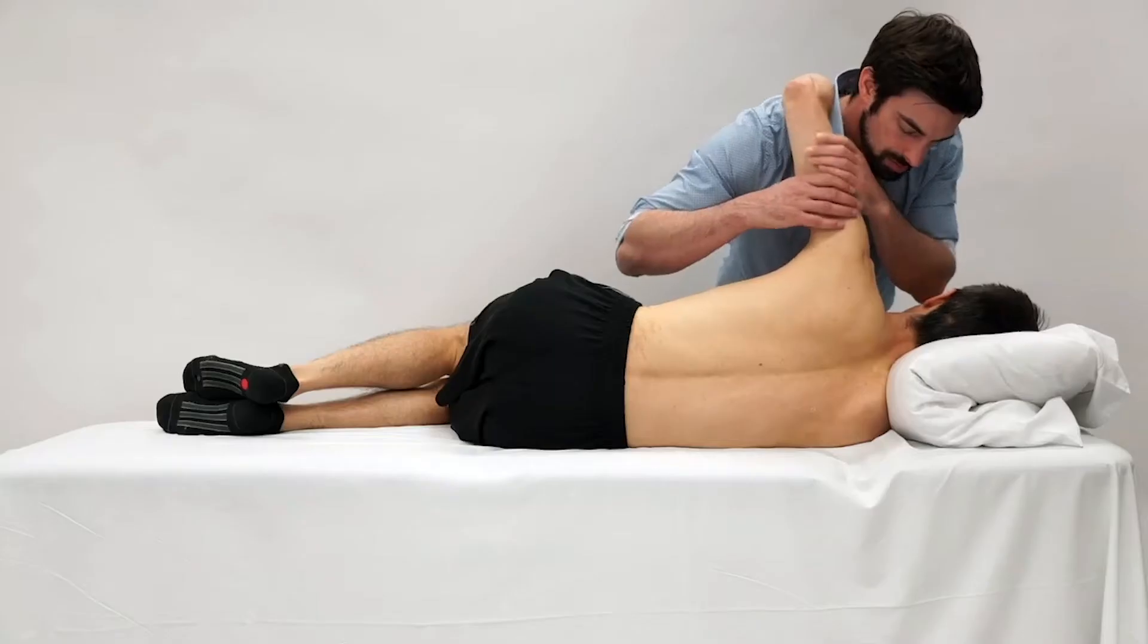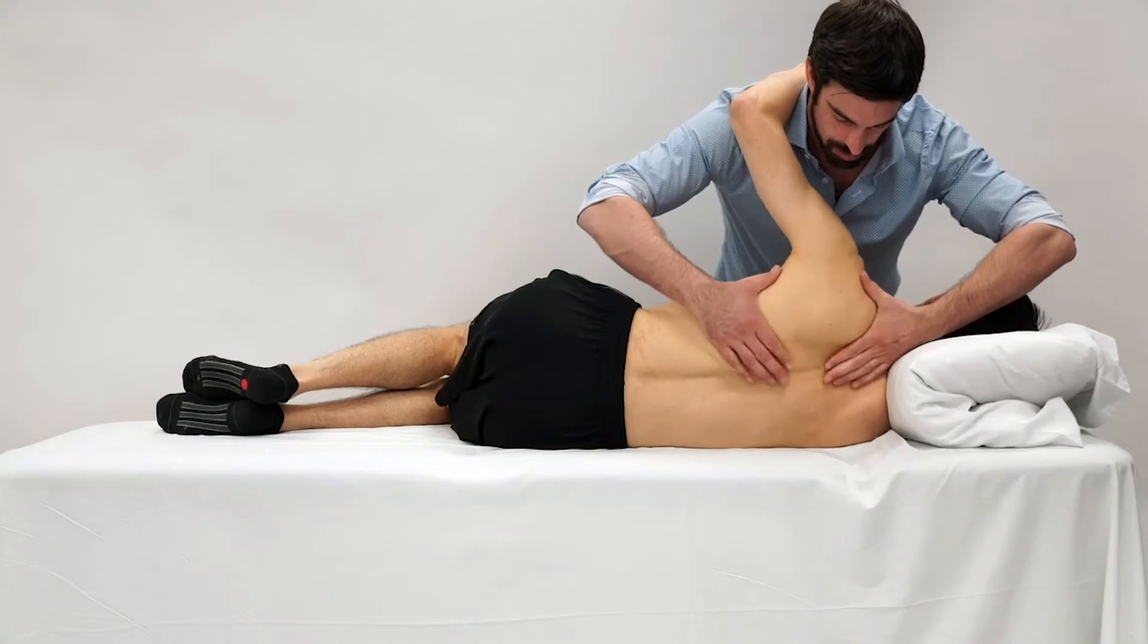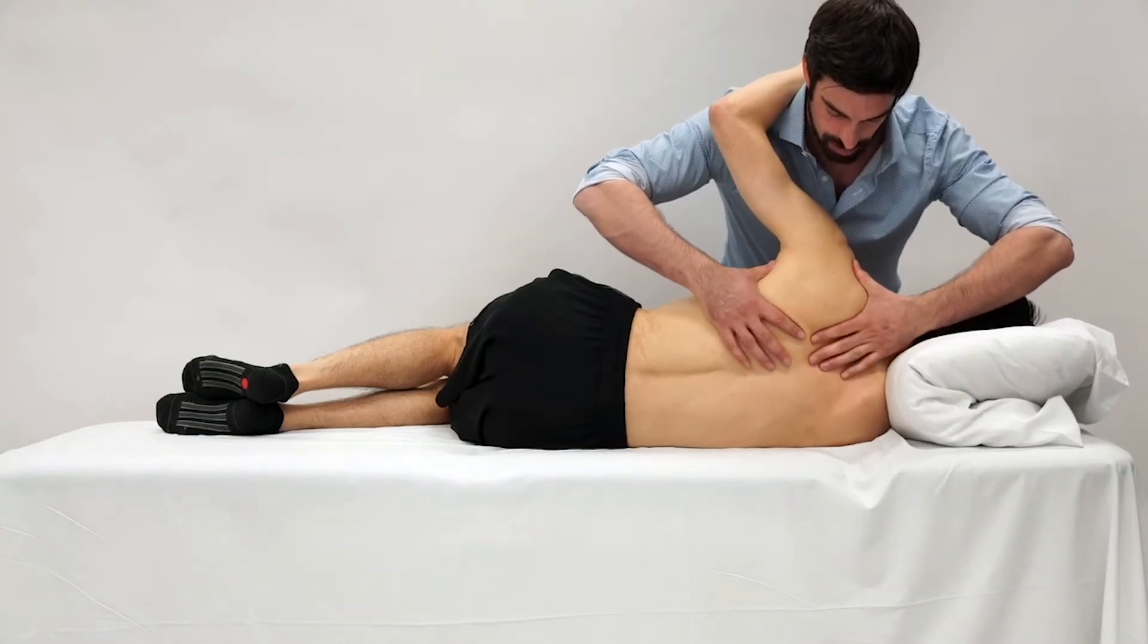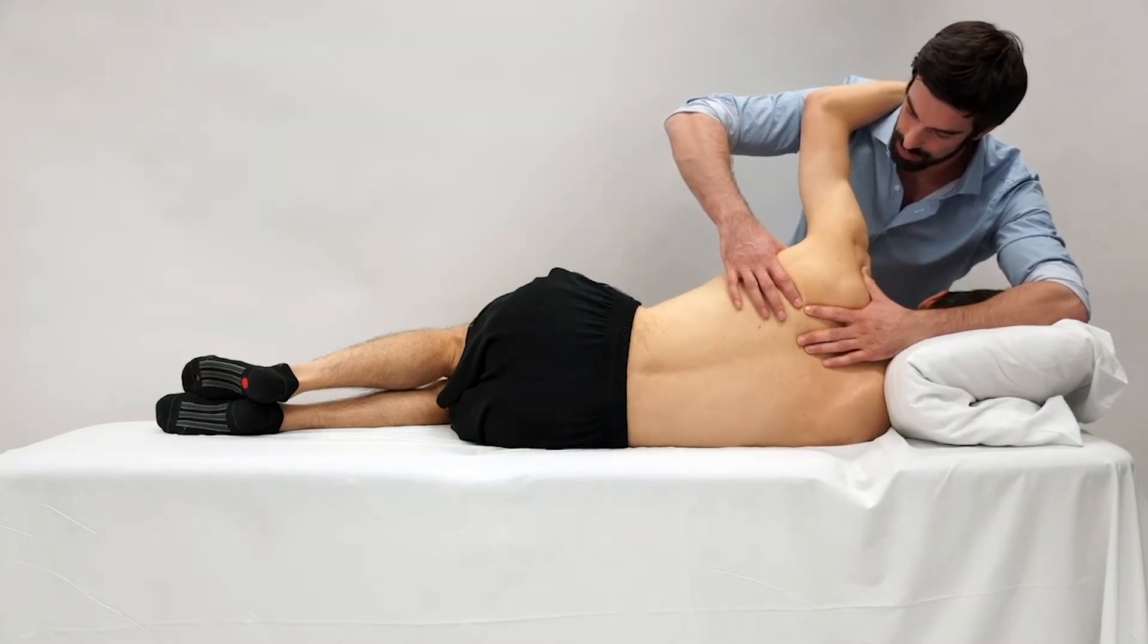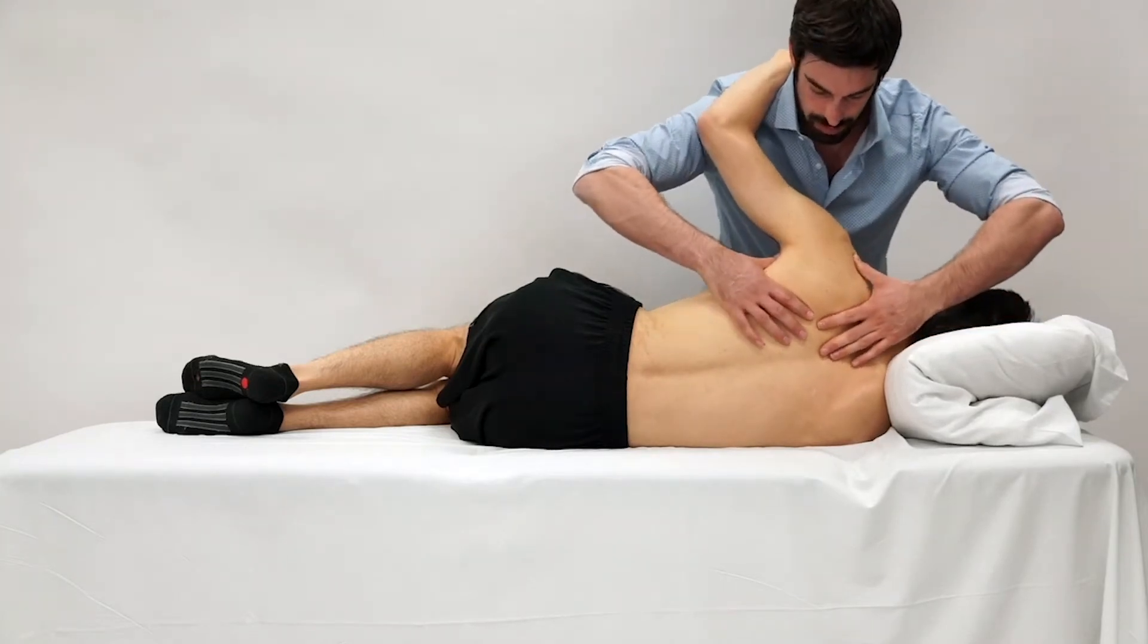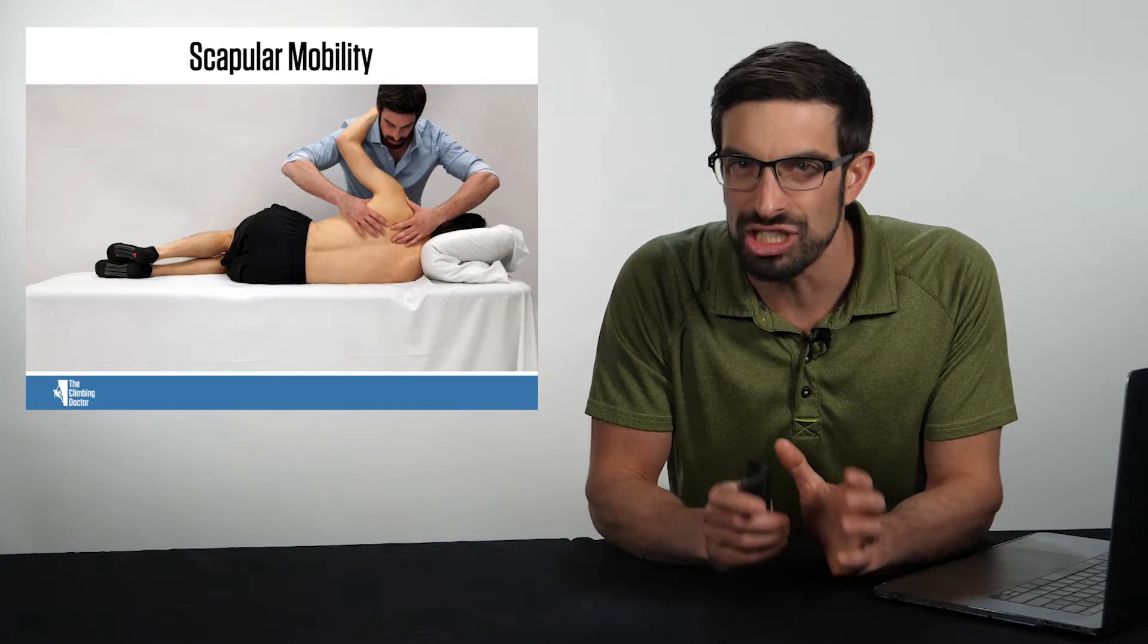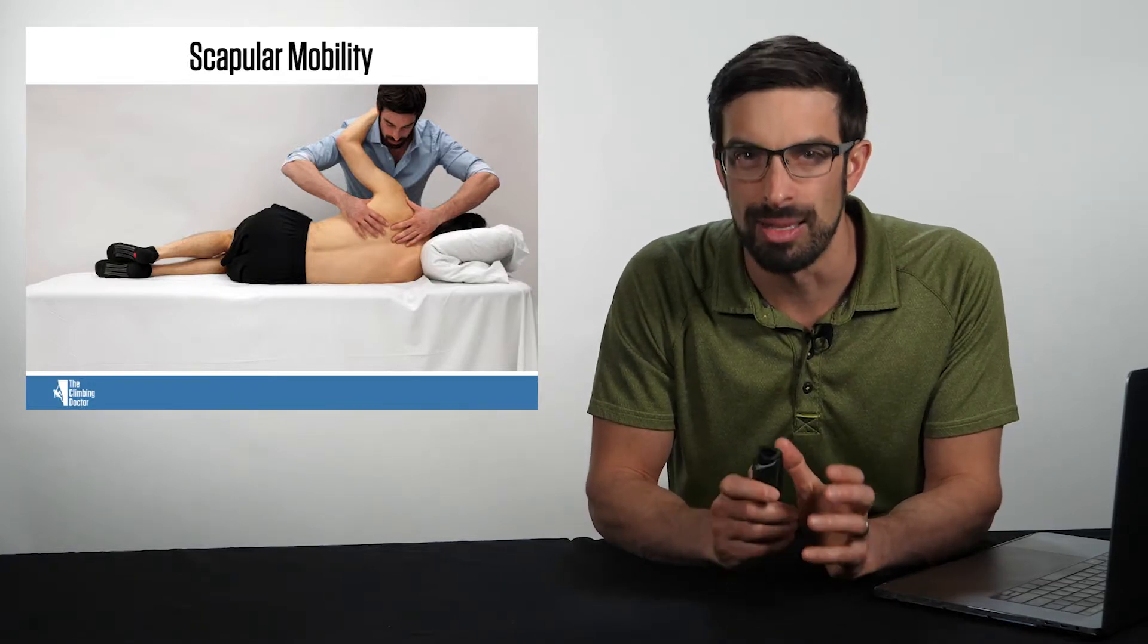Let's watch that again. I grasp the scapula, I shift my body weight and I abduct the scapula, and I upwardly rotate, seeing if there is any resistance of the tissues. Which tissues do you think would be limiting this motion?